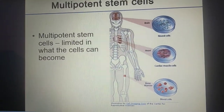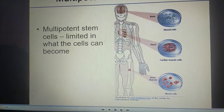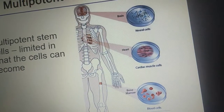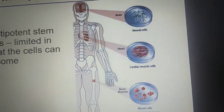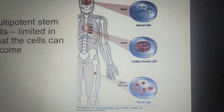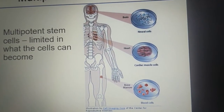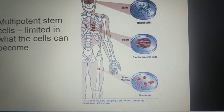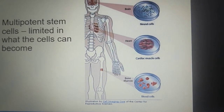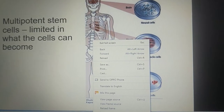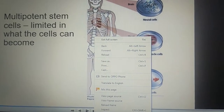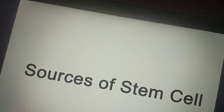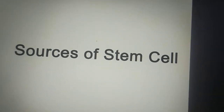Multipotent stem cells are limited in what they can become. These multipotent stem cells can differentiate or transdifferentiate into neural cells, cardiac muscle cells, and blood cells.